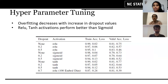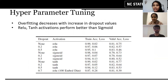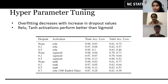Meenakshi will highlight how we did hyperparameter tuning for these models. The hyperparameters were mostly the dropout values, the activation function, and the number of epochs. A couple of combinations we tried are listed in the table on the slide. Without any dropout and with ReLU activation, we have a training accuracy of 99% but only about 81% on the validation — a huge gap indicating overfitting. So we decided to increase the dropout values, and as we increased them, the gap between both accuracies went on reducing.